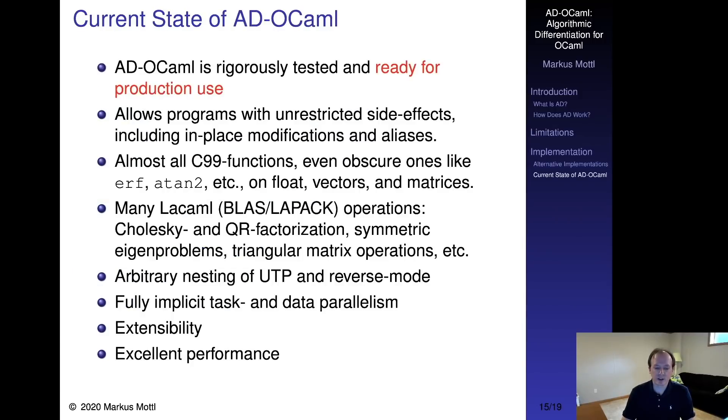Let's discuss the current state of AD-OCaml. Thanks to a rigorous test suite with about 5,000 lines of code, AD-OCaml, which has close to 50,000 lines of code, has reached maturity for production applications. It features almost all float operations provided in the C99 standard, which also work on vectors and matrices. It is mostly compatible with OCaml.